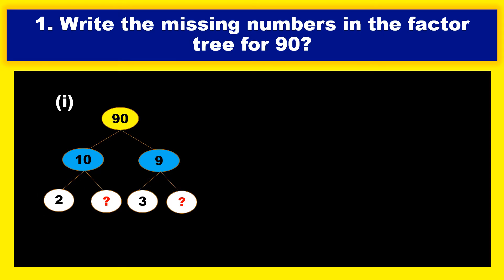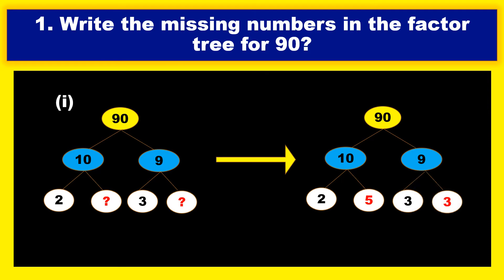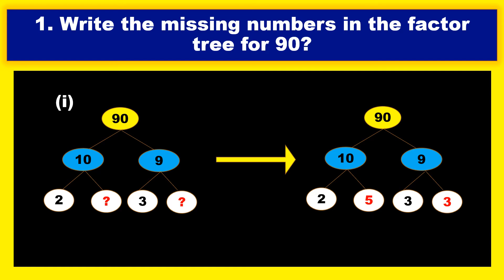So here, 10 means we can write it as 2 into 5 — we know our tables, 2 times 5 is 10. Next, 9 means 3 into 3. We can write the factor tree like: 10 means 2 into 5, and 9 means 3 into 3. He just has to fill the missing numbers. So we fill them in: this blank is filled with 5 and this blank is filled with 3.